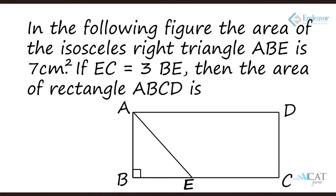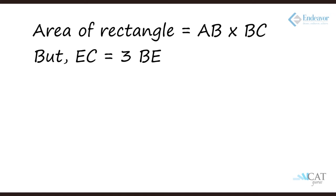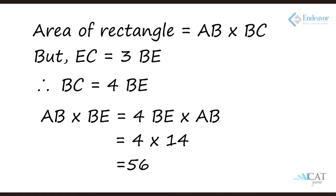First problem: In the figure, the area of isosceles right triangle ABE is 7 square centimeters. If EC equals 3BE, find the area of the rectangle. The area of the triangle is half times base times height. Since EC equals 3BE, the total base of the rectangle becomes 4 times BE. The area scales by 4, but the triangle has a half factor that the rectangle does not, so the area becomes 8 times 7, which equals 56 square centimeters.